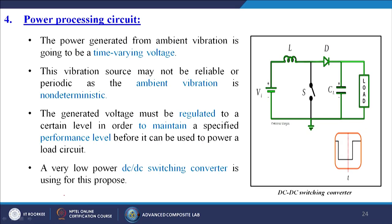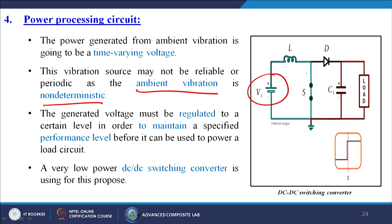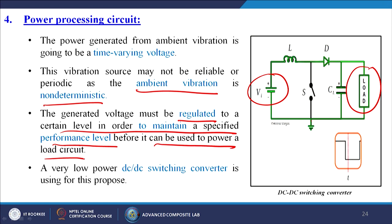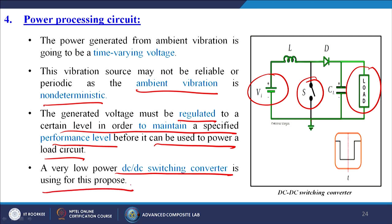For the power processing circuit: the power generated from ambient vibration is a time-varying voltage. These vibration sources may not be reliable or periodic as ambient vibration is non-deterministic. The generated voltage must be regulated to a certain level in order to maintain a specified performance level before it can power a load circuit. A very low power DC-DC switching converter is used for this purpose. Even if vibrations are not continuous, we can control them and generate electricity continuously.